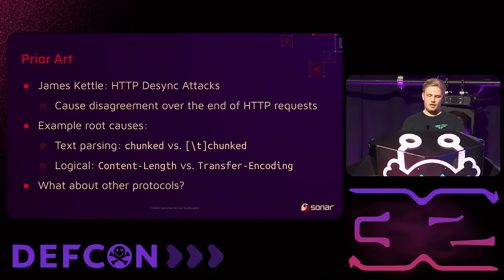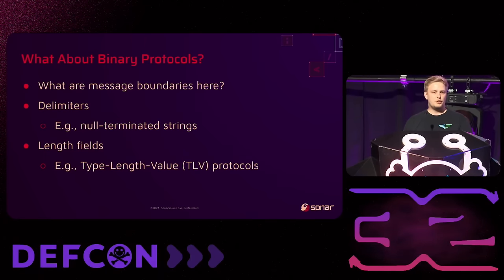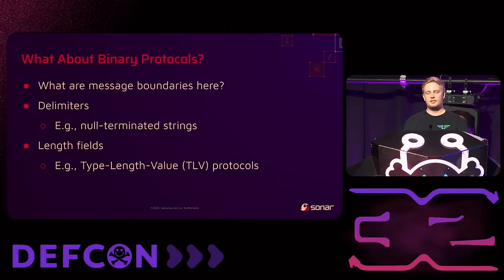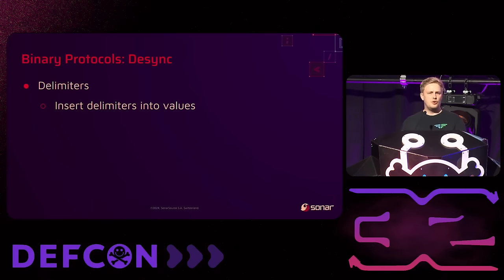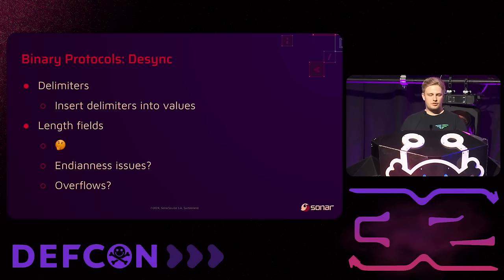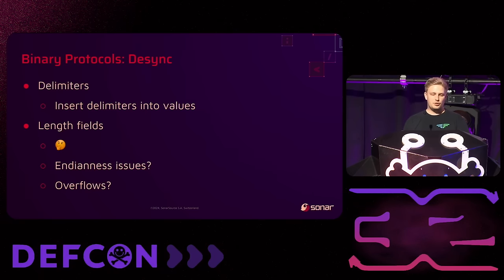But what about other protocols, specifically binary protocols? How do they handle message boundaries? Some use delimiters — for example, null-terminated strings use the null byte. Others use length fields, and there's an entire family called TLV (type-length-value) protocols with a type field, a length field, and the rest as the value. For delimiters, desync is intuitive — put a delimiter where it doesn't belong. For length fields I was stuck, thinking about endianness issues or integer overflows.